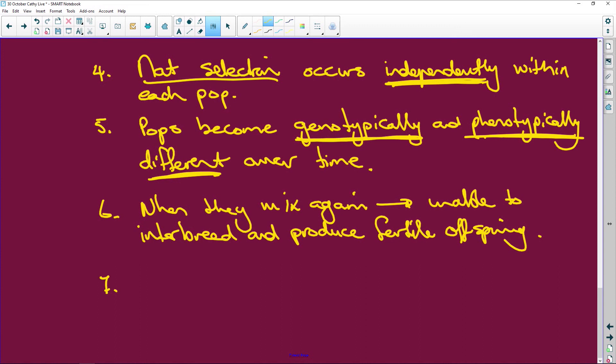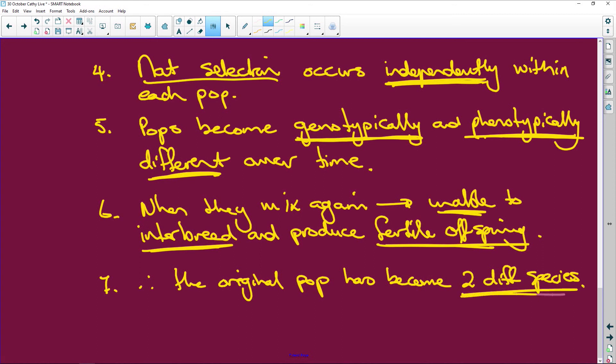Number seven: therefore the original pop has become two different species. So when they mix again they're unable to interbreed and produce fertile offspring, they've now become different species. Remember last week when we did the dogs and one of the questions was why are dogs the same species? Because they can interbreed and produce fertile offspring. If I have a horse and a donkey, I can get them to interbreed, yes I can, and I produce a mule, but the mule is infertile, it cannot reproduce. So it has to be both conditions to be the same species.